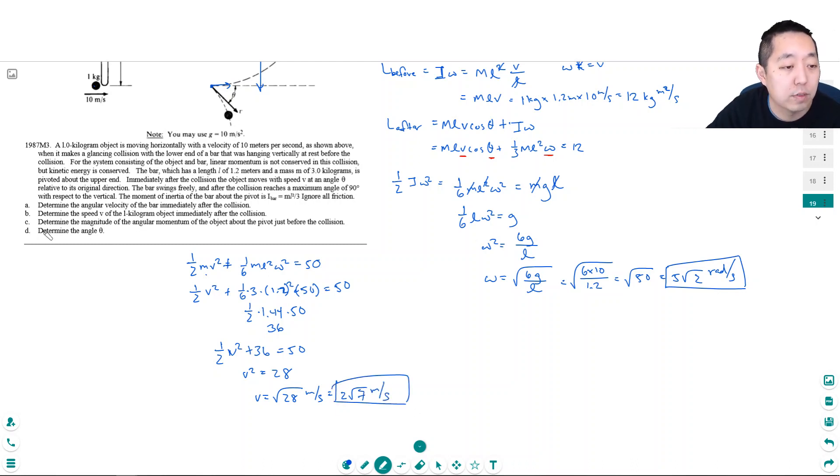Okay, so that's the linear velocity. Determine the magnitude of the angular momentum of the object about the pivot just before the collision. So for c, just before the collision, the angular momentum of the object about the pivot. We just did that up here. L before, it's equal to 12. So this part is c right here. This is c. Because we did that already.